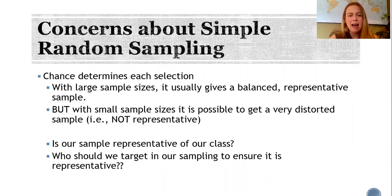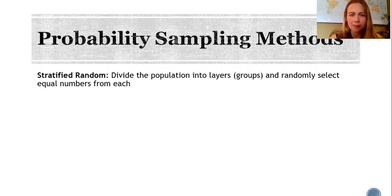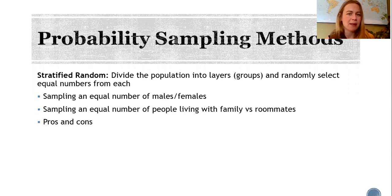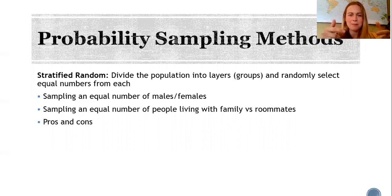So what can we do to ensure a more representative sample? There are two main ways: stratified random sampling and proportionate stratified sampling. In stratified random sampling, we divide the population into layers or groups and then randomly select equal numbers from each group — for example, an equal number of males and females, or people who live at home versus those who live with roommates. The benefit is that both groups are equally represented, but the downside is this might not reflect the actual composition of the target population if those subgroups aren't equally represented there.